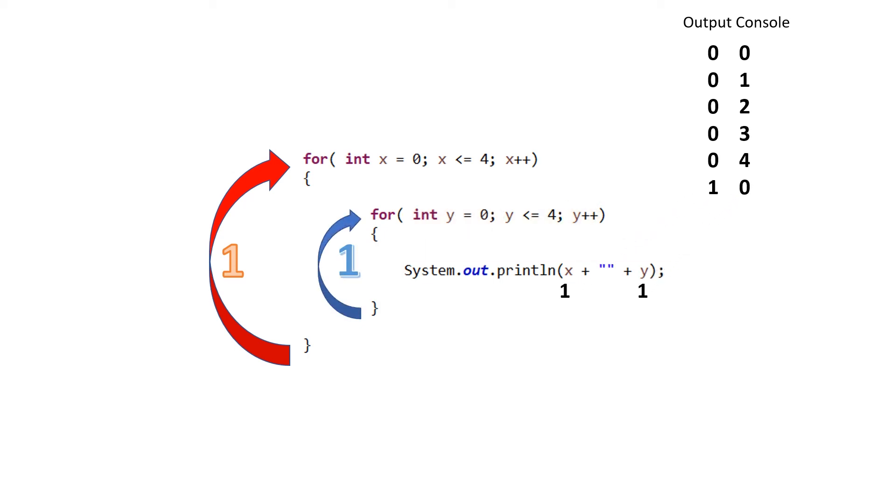This process will continue until x reaches a value of 5. At this point, the program will completely exit out of the entire nested for loop structure and continue on its way. The following animation will quickly cycle through the entire process to help you visualize a nested for loop structure.